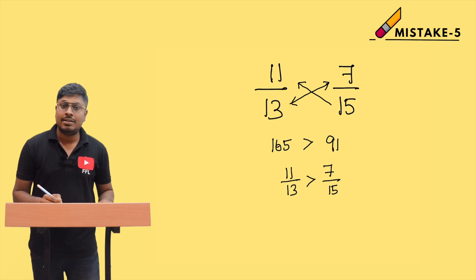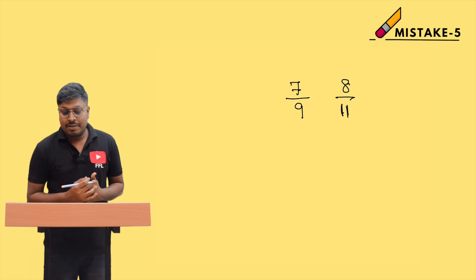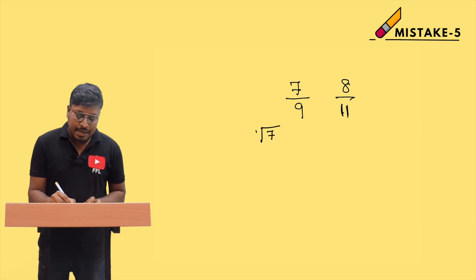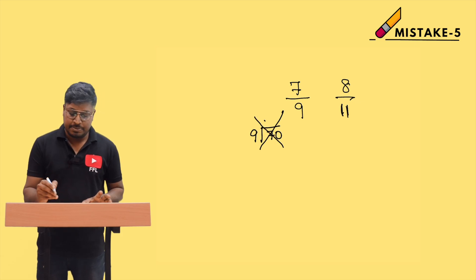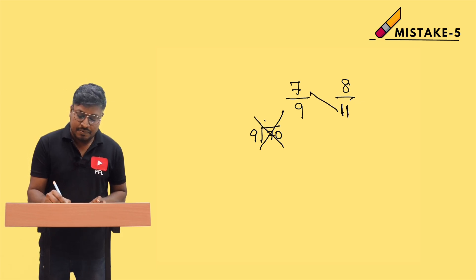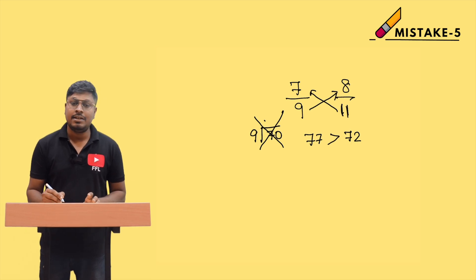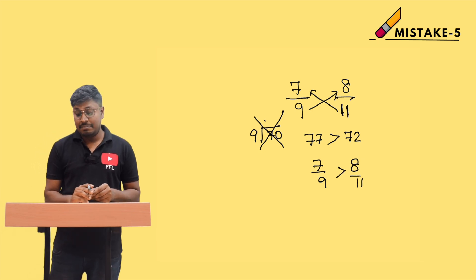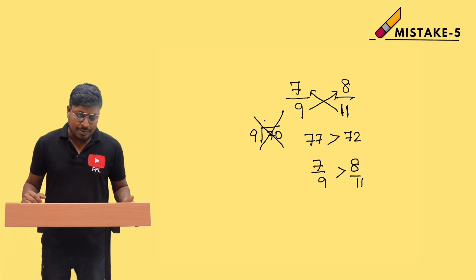Here is another example: compare 7/9 and 8/11. You should not do the division method. Instead, cross multiply: 11 into 7 is 77, and 9 into 8 is 72. Since 77 is greater than 72, we can say 7/9 is greater than 8/11.